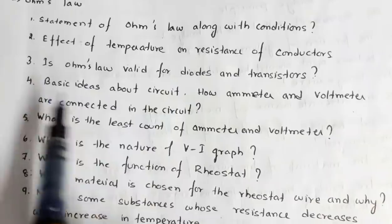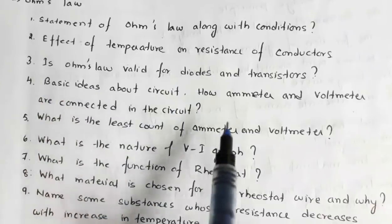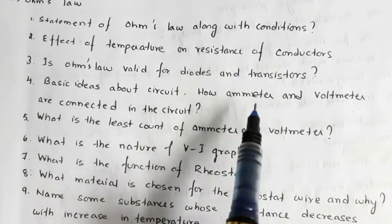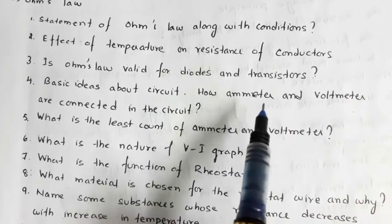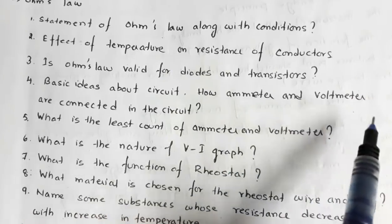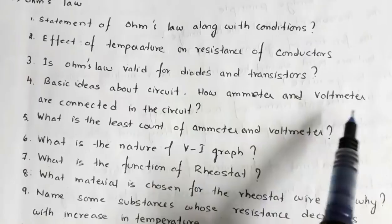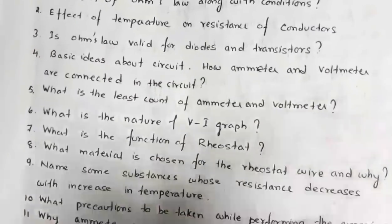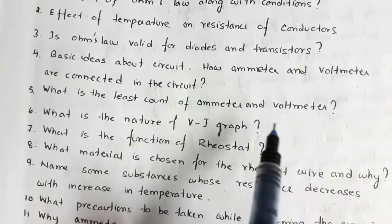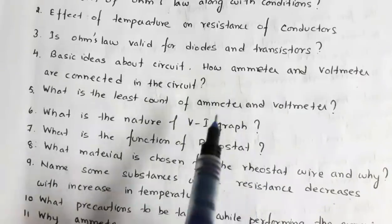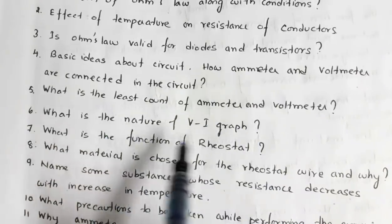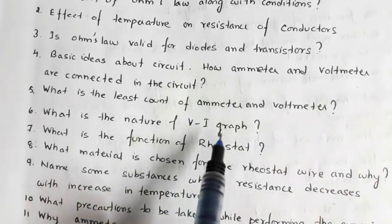You may be asked to draw the circuit or explain the components in the circuit — how the ammeter and voltmeter are connected. The ammeter is a current measuring device and it is connected in series. The voltmeter is a potential measuring device and it is always connected in parallel. You may also be asked what is the least count of the ammeter and the voltmeter.